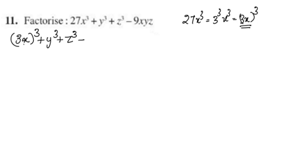We have 3x and 3x, which gives us 9xyz. So the term becomes minus 9xyz, with factors 3x, y, z.